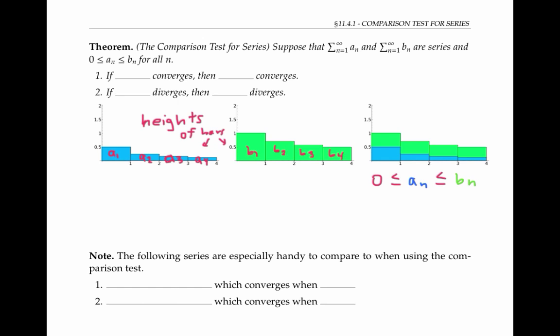Since the base of each bar has length one, the height of each bar is the same number as its area. So when we write the sum from n equals one to infinity of a sub n, this represents the total area of all the green rectangles — the total green area.